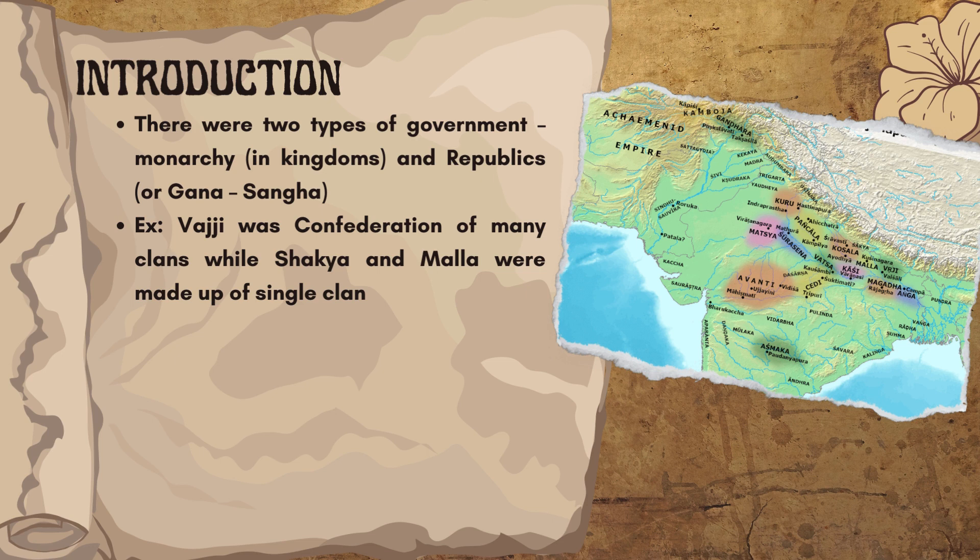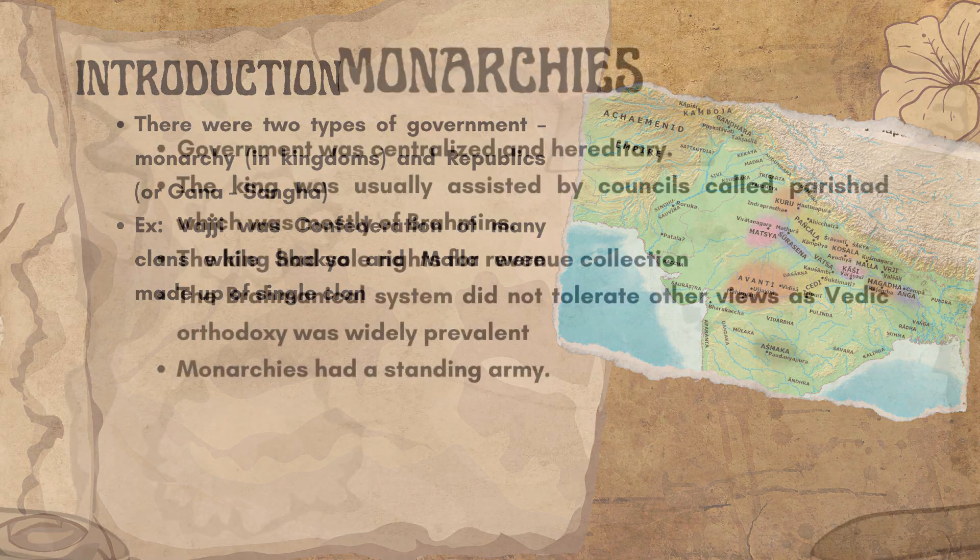For example, Vajji was a confederation of many clans, while Shakya and Malla were made up of a single clan.